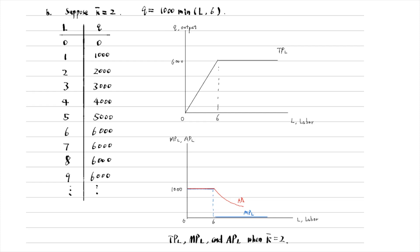The marginal product of labour is horizontal at 1,000 up to 6 workers, and then becomes a horizontal line at 0 — shown as the blue line in the diagram. The average product of labour is the slope of the straight line that connects the origin and the points on the total product curve. It is a horizontal line at 1,000 up to 6 workers, and then drops gradually — shown as the red curve in the diagram.